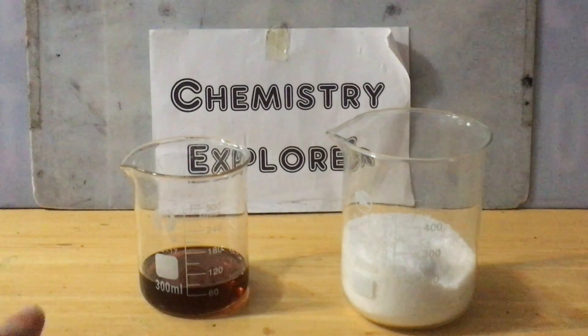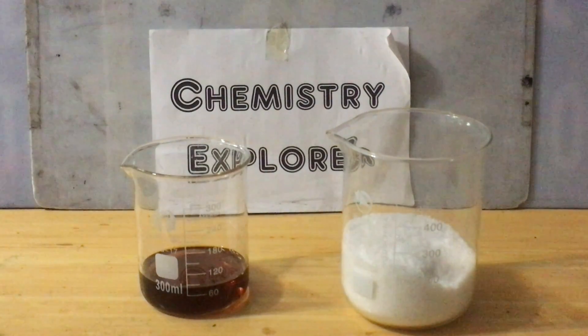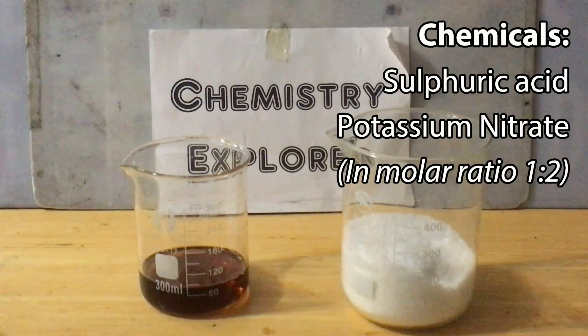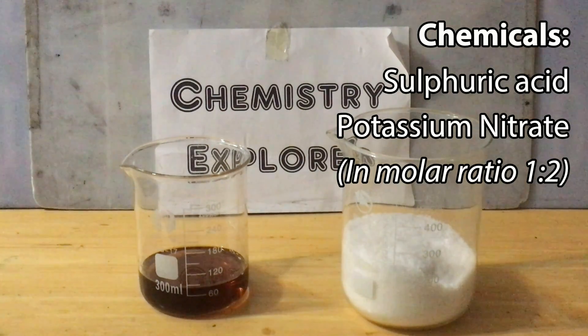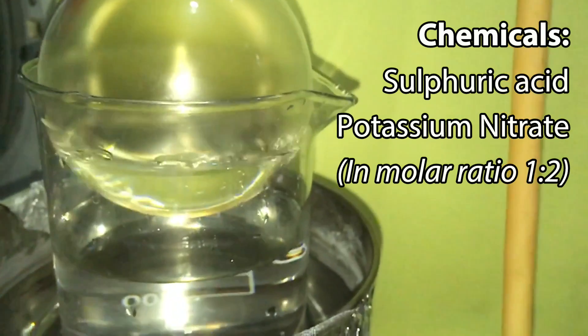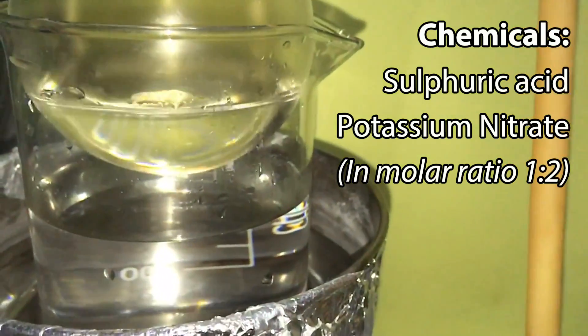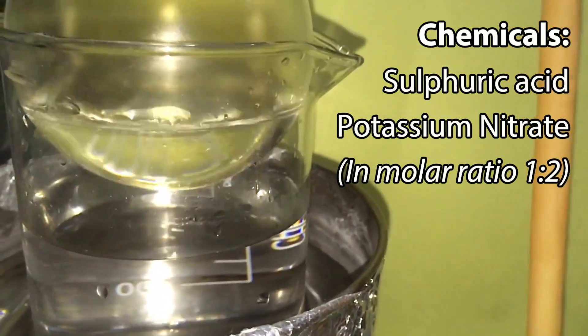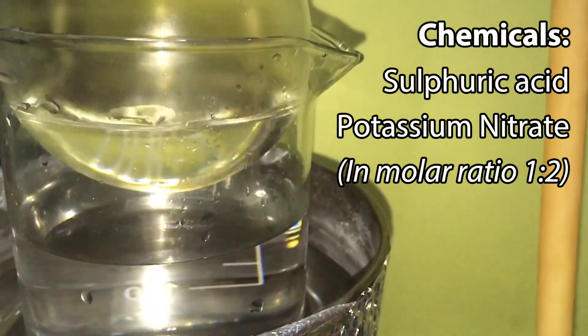For this reaction, you only need two chemicals: potassium nitrate and sulfuric acid. You can actually use any of the nitrate salts such as sodium nitrate or ammonium nitrate if they are easy for you to get. But if you are using barium nitrate, calcium nitrate, etc., you should make sure that they are all dissolved in water before adding the sulfuric acid. I will tell you why in a moment.